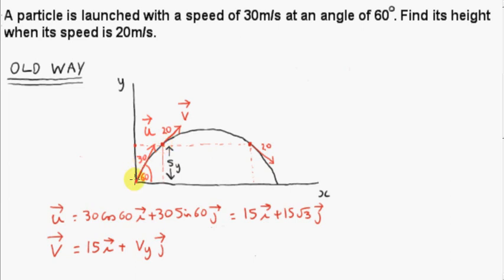At some time, the velocity — or the speed, I should say — will decrease from 30 meters per second to 20 meters per second. So we are interested in the height of the particle above the ground at that time. We have a symmetry in projectile motion, which means there are two positions for which the speed is 20, and those two positions are at the same height above the ground. We are only interested in the y position, not the x positions, so we can call that distance sy.